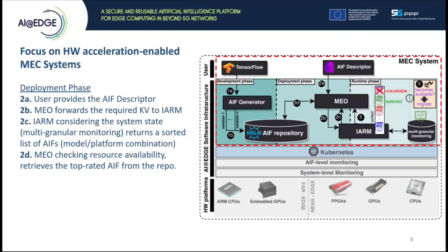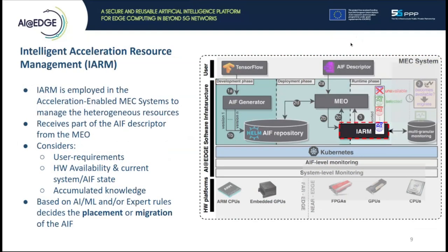Moving to the deployment phase, the user first provides the AIF descriptor. Then the MEO forwards the required parts to IARM, which decides the AIF placement. IARM receives a part of the AIF descriptor from MEO via REST API. It then considers first the user requirements—for example, latency or throughput, since we are talking about latency-sensitive AI inference—second, the versions included in the AIF descriptor, and third, the current hardware availability and state of the cluster, leveraging the monitoring scheme of AIF and system-level metrics. Leveraging the accumulated knowledge about the performance of the different versions, it decides the placement or migration of the AIF.